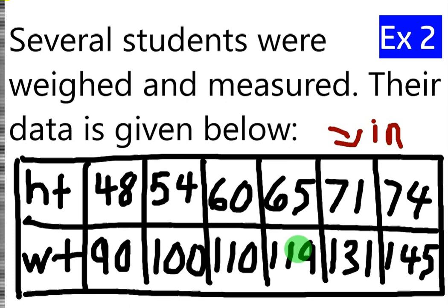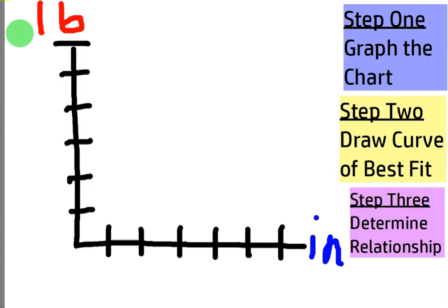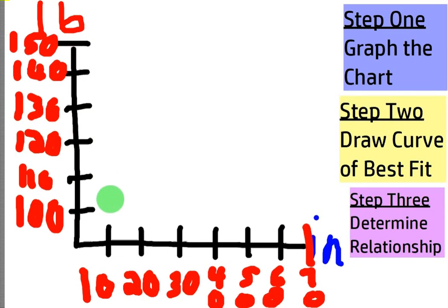Let's go with the first point: 48, 90. I'll just say this is 50 inches. Actually, I need to label it right now. So somebody tell me what the first point was? 48, 90. So close to 50 and then about right there, right? 48, 90. Okay, what's the next point? 54, 100. So about right there. Next point: 60, 110. About right there. Next point: 65, 119. And then 71, 131.